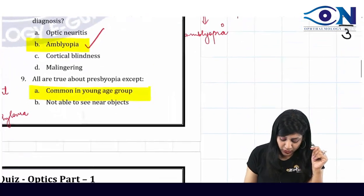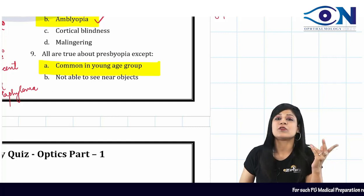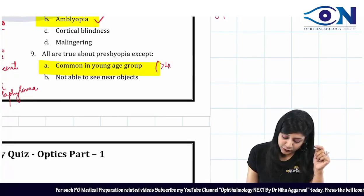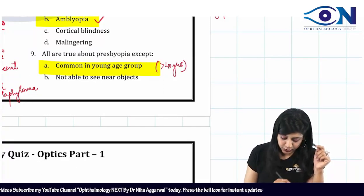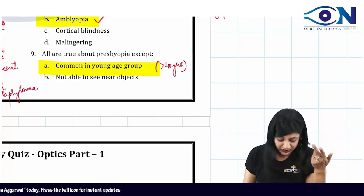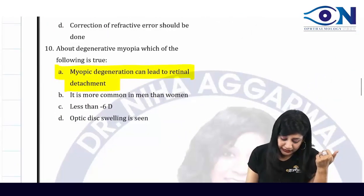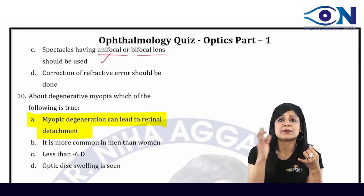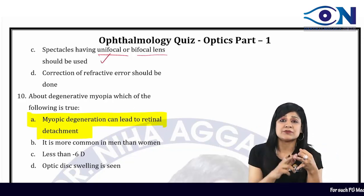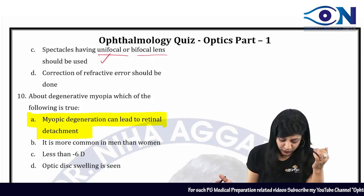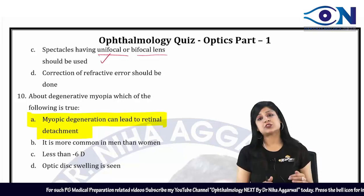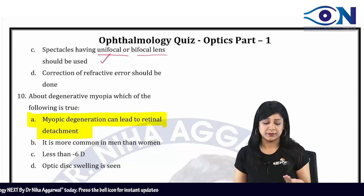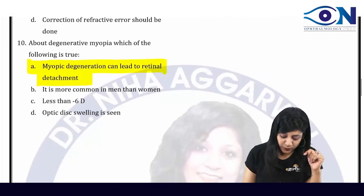Question 9: All are true about presbyopia except — presbyopia is not common in young patients; it occurs after age 40. The answer is A. Not being able to see near objects is true. Using unifocal or bifocal lenses is appropriate. Correction of refractive error for distance vision should be done first, otherwise you end up with overcorrection of presbyopia.